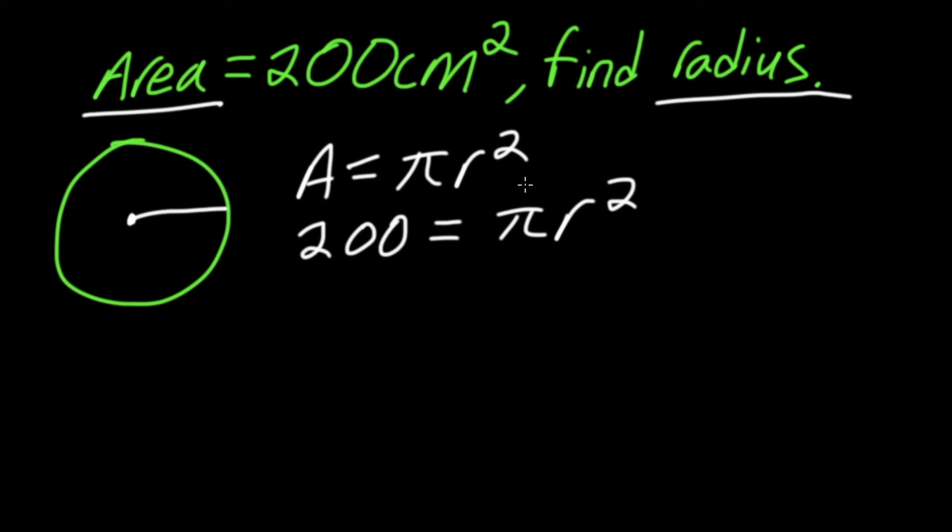To do that, let's first get rid of pi by dividing both sides by pi. That leaves us with r squared—I'll just switch sides—equals 200 over pi, or r² = 200/π.